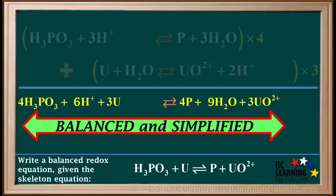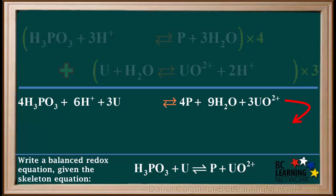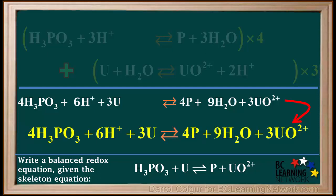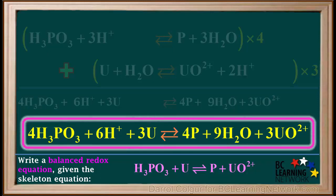Now the redox equation is both balanced and simplified. If you check, you'll see that there are 4Ps, 18Hs, 3Us, and 12Os on both sides. And each side has a total ionic charge of positive 6. We'll rewrite this equation with a larger font here. So this is the final balanced redox equation in acid solution, starting from this skeleton equation.